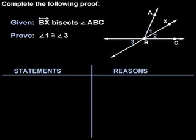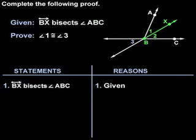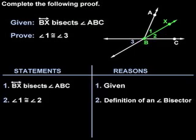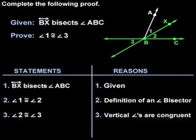This proof should make sense because if ray BX bisects angle ABC, then angle 1 is congruent to angle 2 by the definition of an angle bisector. And we know that angle 2 is congruent to angle 3 because vertical angles are congruent.